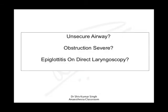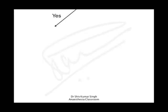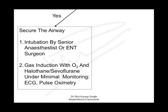If you have an unsecured airway, the obstruction is severe, or you see epiglottitis on direct laryngoscopy, the important thing is to secure the airway. Intubation is always done by a senior anesthetist or ENT surgeon.